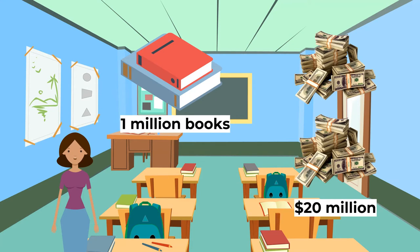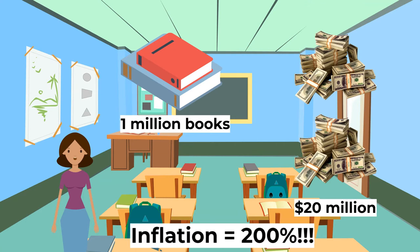We can say that the increase in GDP is a money illusion. True, you have more money, but if everything is more expensive, you are not any better off. In this simple model, printing more money has made goods more expensive but hasn't changed the quantity of goods.